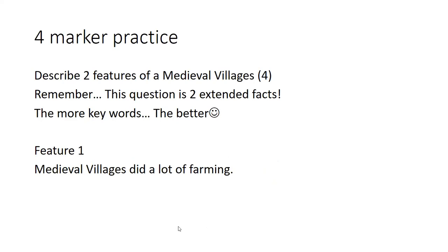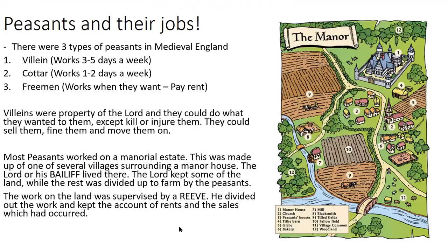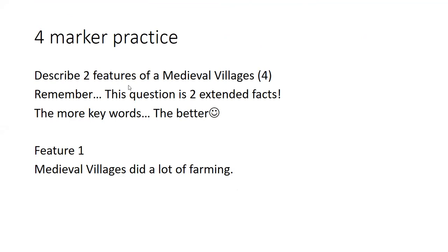As practice you can attempt this question using what we've been through in this video — you could talk about the manorial estate, as long as it links to the question with two key standout things. The way I explain this question is: if you were asked to describe two features of the face, you would write about two things you can write a lot about. For example, one feature of the human face is the mouth — you could write a lot about that. You wouldn't choose a feature like eyelashes that you can't write much about. A feature is something that stands out, not something you're limited on.